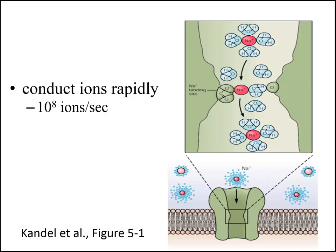Ion channels allow ions to cross the membrane at speeds of 10 to the eighth ions per second — much faster than enzymatically-mediated reactions — and thereby mediate rapid changes in the membrane potential.